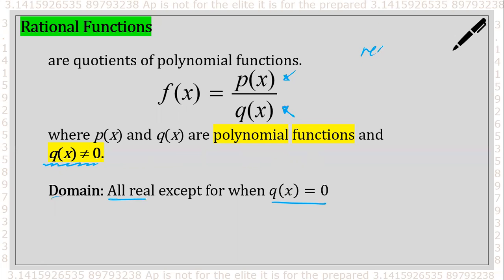Remember, you cannot have a number on top divided by zero — that is undefined. But you can have zero divided by a number. Think of it like zero pizzas divided by three people — it's still zero. So be very careful on that distinction.